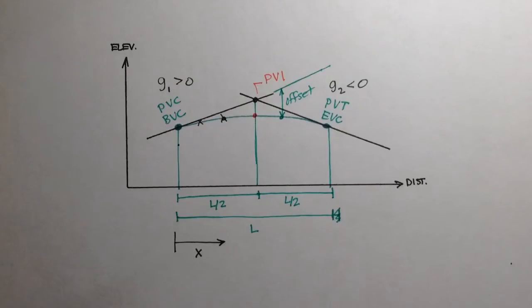All right, welcome back. As I've previously mentioned, vertical curves in geomatics and surveying are based upon parabolic curves. And the reason behind that is because parabolic curves provide a constant rate of change between the entering tangent and the exiting tangent.